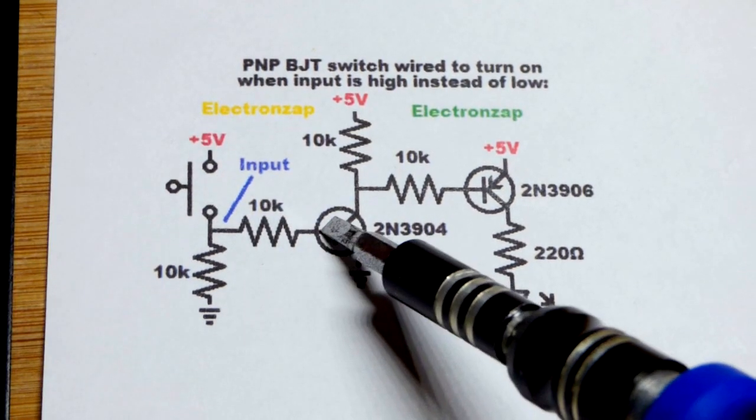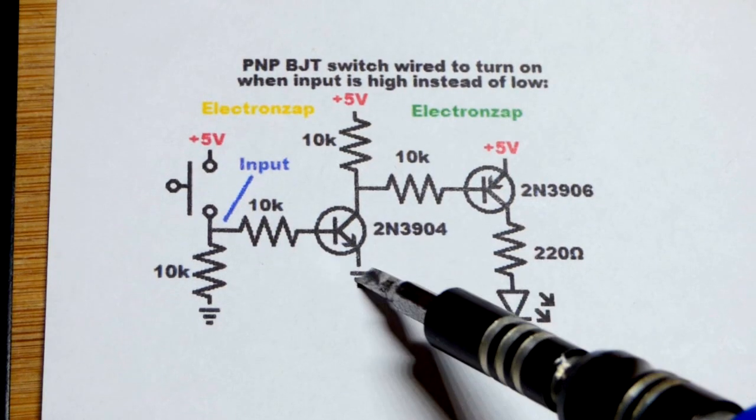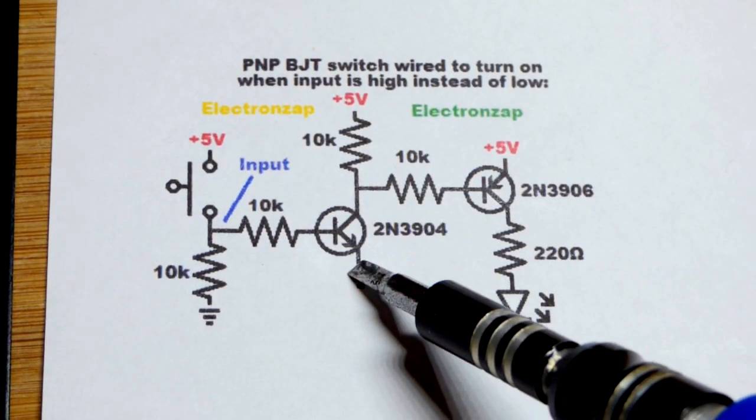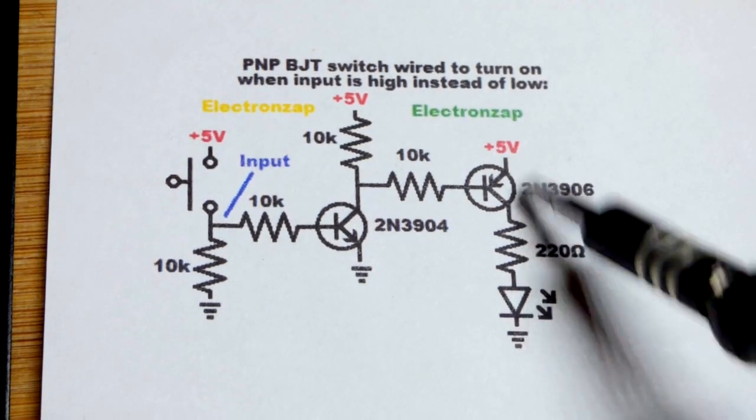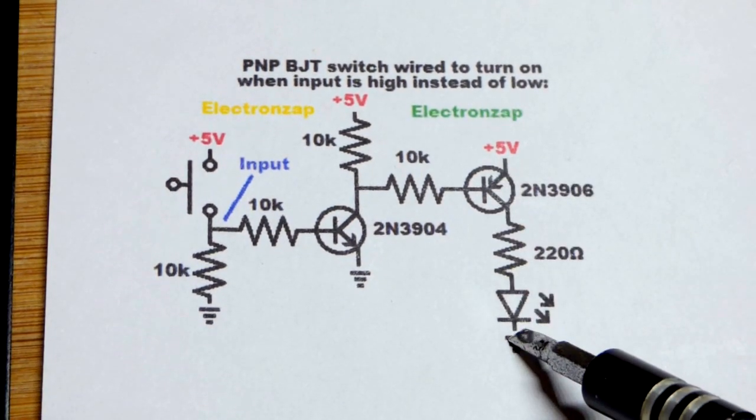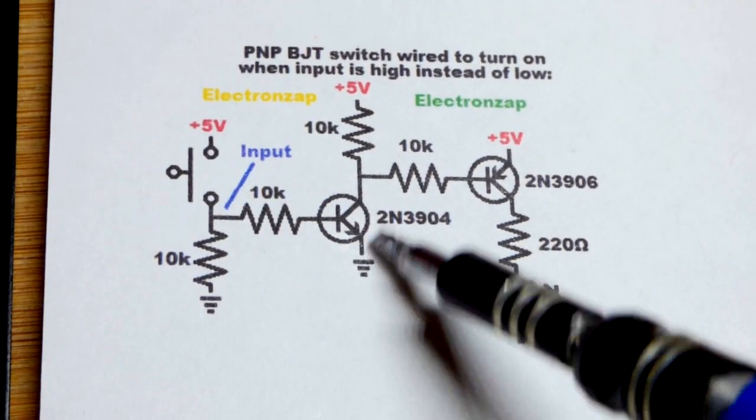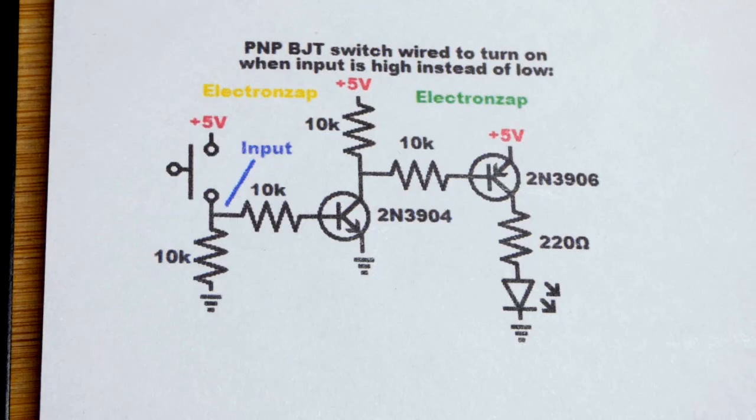That resistor won't matter anymore other than a little bit of current trickling through. But in any case, we'll have a high input there. The NPN bipolar junction transistor will turn on, which will allow the PNP bipolar junction transistor to turn on. So now the PNP bipolar junction transistor turns on when our input is high, instead of having the input go low to turn it on.